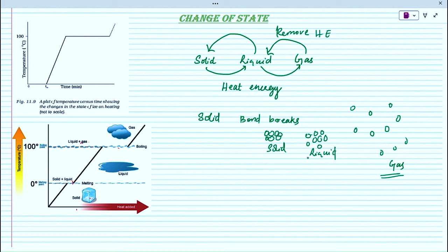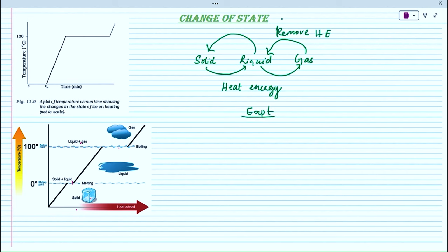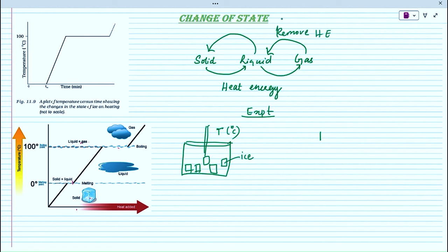Now we are going to discuss some experiments used to define two important points — the change of state occurs at a particular temperature, which we are going to study in detail. Take a beaker, put some ice cubes in it, and place a thermometer to measure the temperature in degrees Celsius. Also take a stopwatch to measure the time, and record time and temperature in a tabular column.